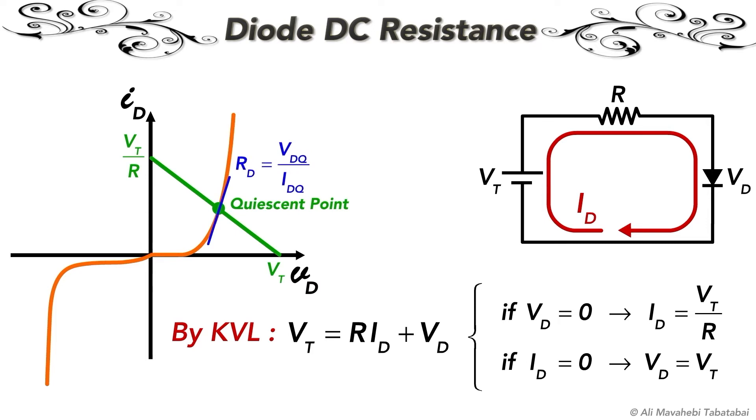Now the question is how can we find the current and voltage of the quiescent point. The diode current and voltage at the quiescent point are indicated by I subscript DQ or V subscript DQ.